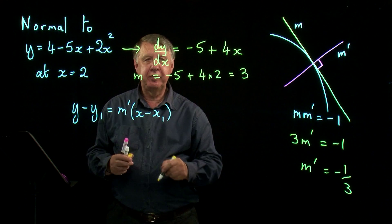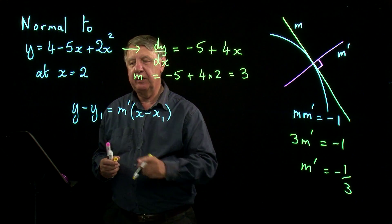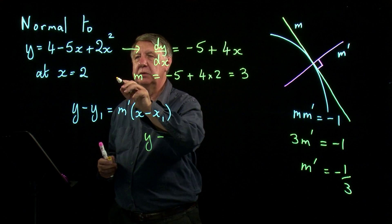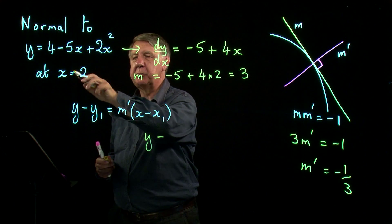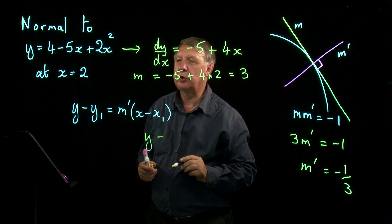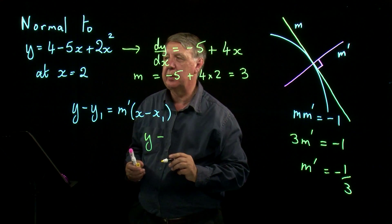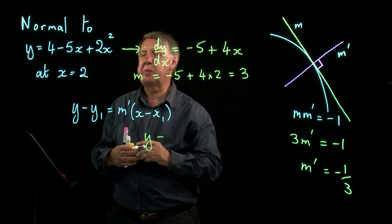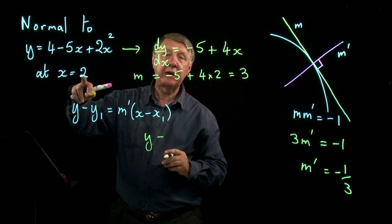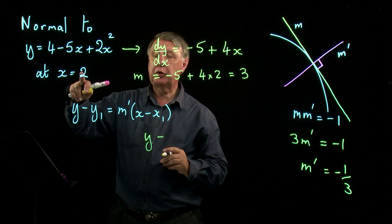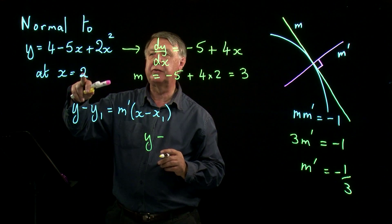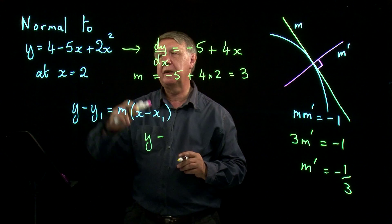So let's start to fill in our equation here then. y minus y1. Ah, that's a problem, isn't it? We haven't got a y1 in this example. So again, another little difference which sometimes catches people out. We know what x is and of course we must remember that this is on the curve so it satisfies the equation.